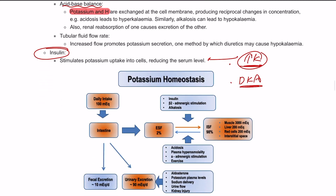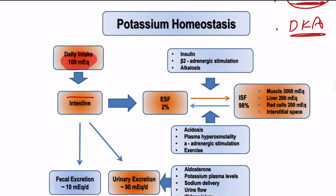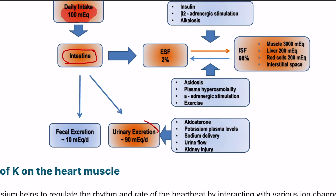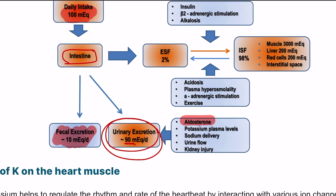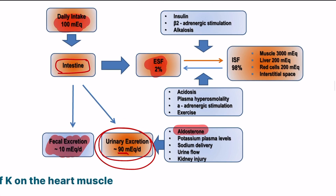Looking at this diagram: the normal daily intake of potassium is 100 milliequivalents. It is absorbed from the intestine and distributed — about 90 mEq is excreted in the urine, mainly regulated by aldosterone, which exchanges salt and water for potassium and hydrogen. About 10 mEq is excreted in fecal material, and around 2% in sweat fluid. Potassium is important for muscle contraction including the heart and voluntary muscles. Insulin and beta agonists, as well as alkalosis, play a role in moving potassium inside the cell.